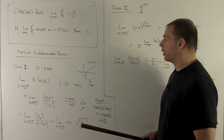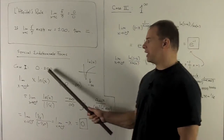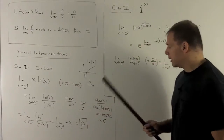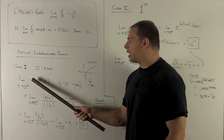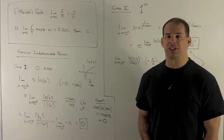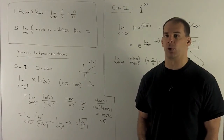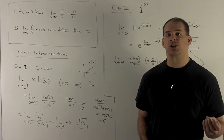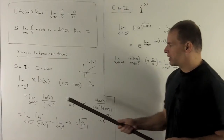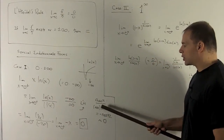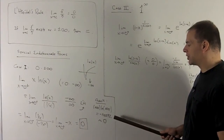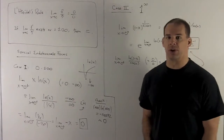That gives us the limit as x goes to 0 of minus x. Putting 0 in, 0 comes out, so the answer is 0. With these unusual limits, we can check by plugging in a very small number like 0.0001 into the original expression. Putting it into the calculator gives approximately minus 0.00092, which is close enough to 0 that we're confident the answer is correct.